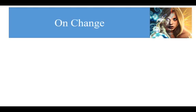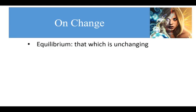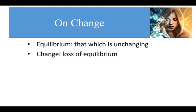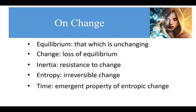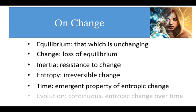So now we can add one more term to our list. Equilibrium: that which is unchanging. Change: loss of equilibrium. Inertia: resistance to change. Entropy: irreversible change. Time is an emergent property of entropic, or irreversible, change — this is what gives us the arrow of time. And evolution is continuous, entropic change over time.